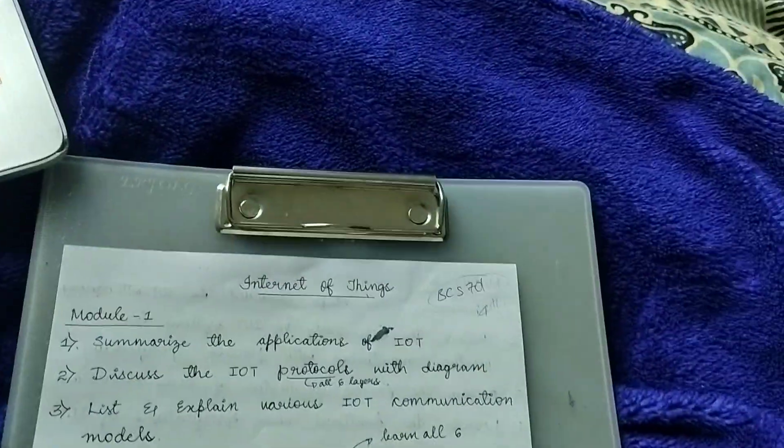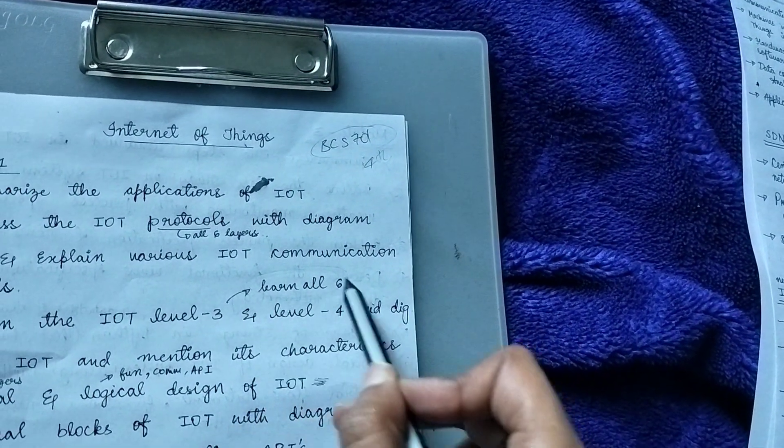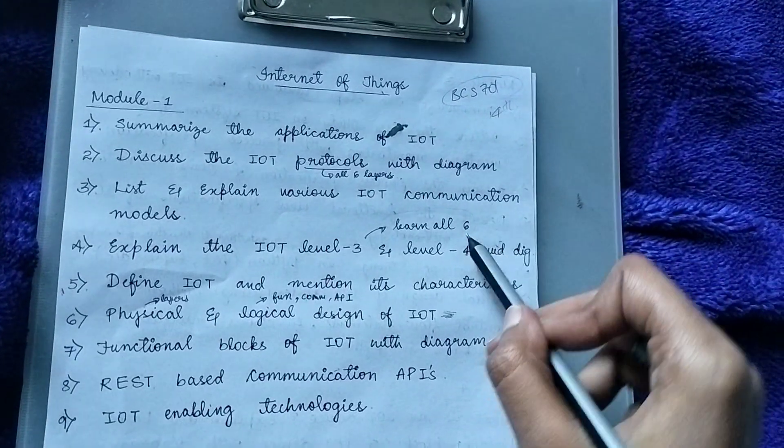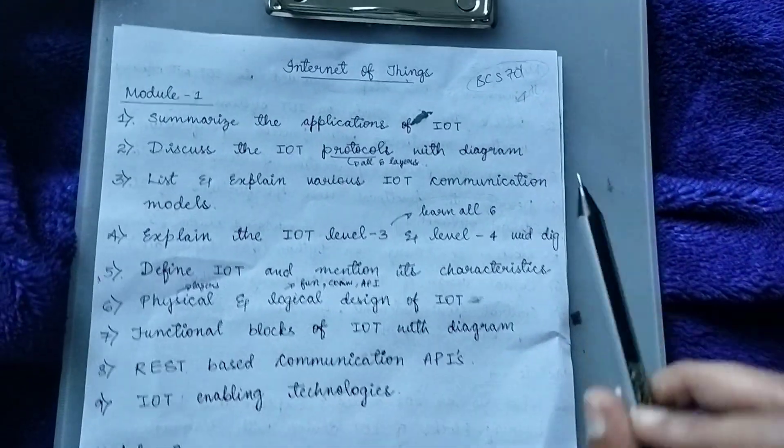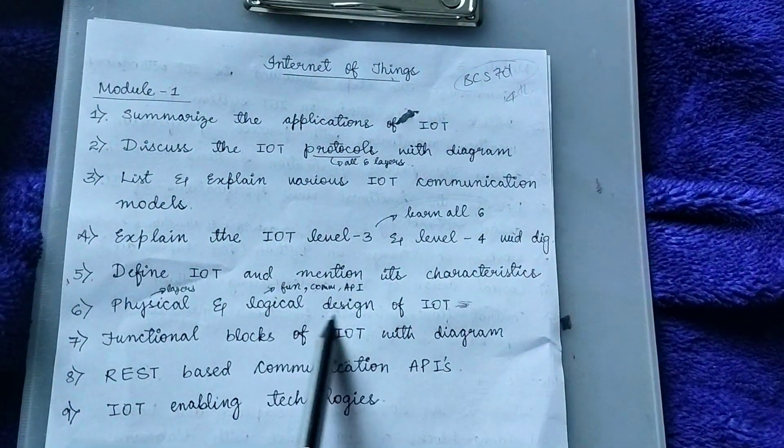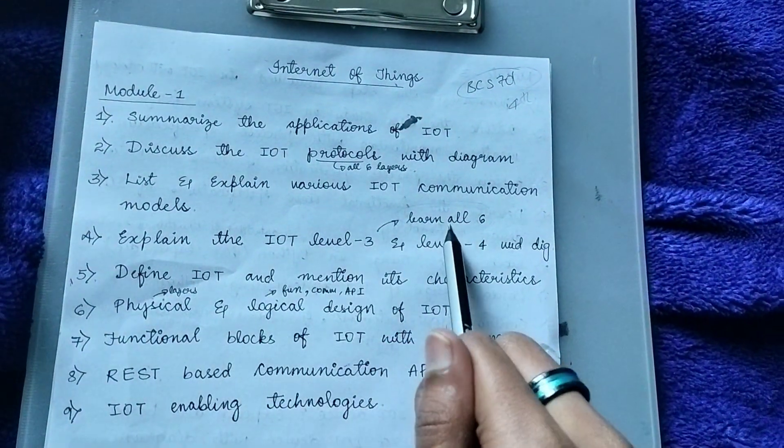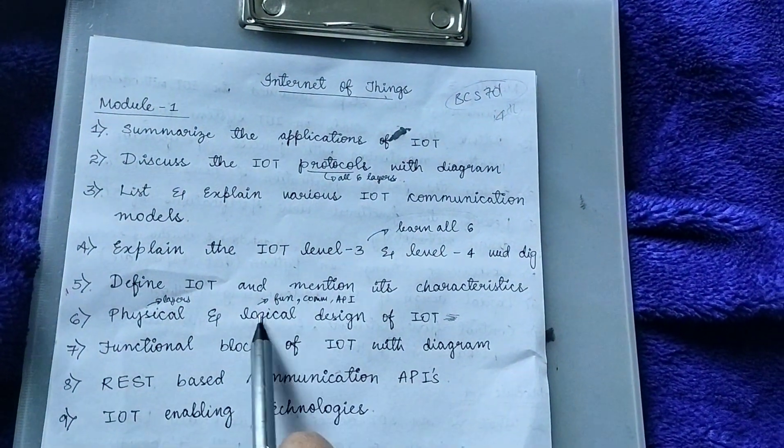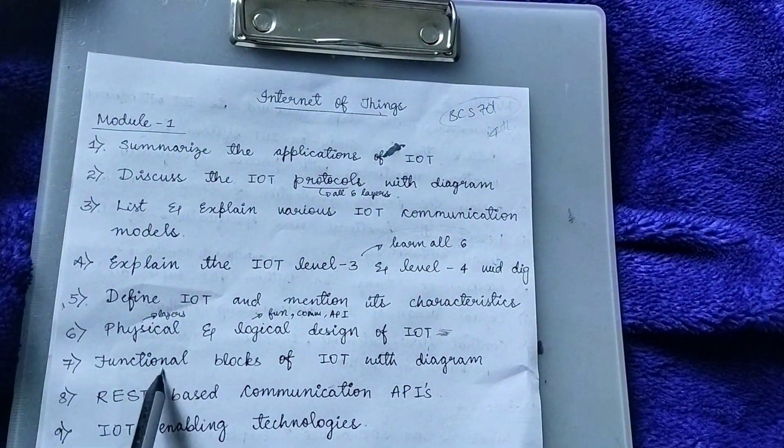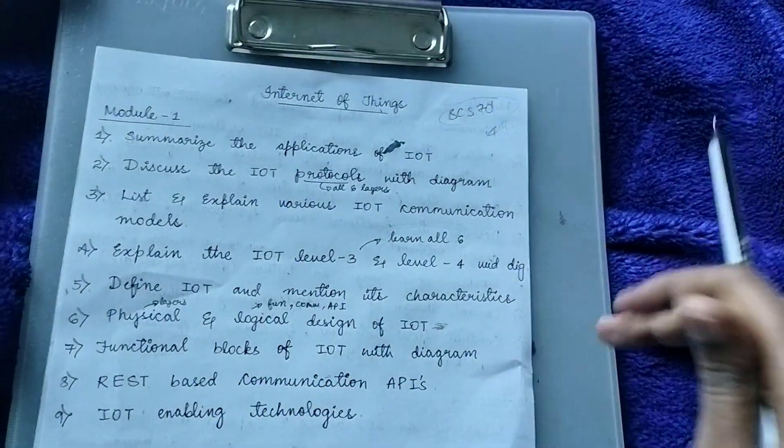Which is from the question paper, but we are supposed to learn all six levels. So I thought I'll skip this question. And there is a question called physical and logical design of IoT. So for this question you have to write again these six layers for physical, and for logical there are functional blocks which is again a different question. You should write about another three questions for this question, that's it.